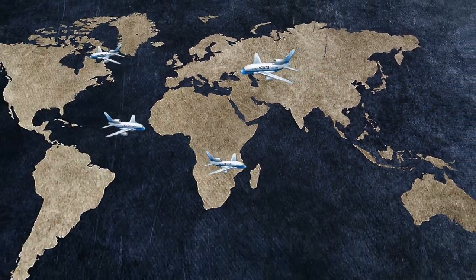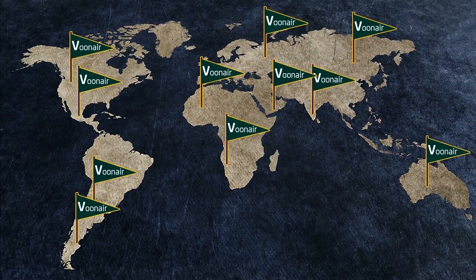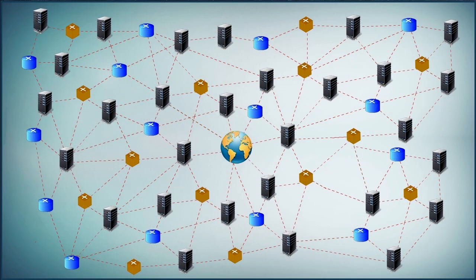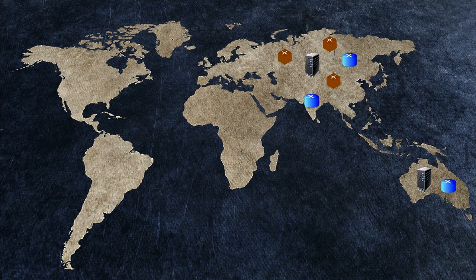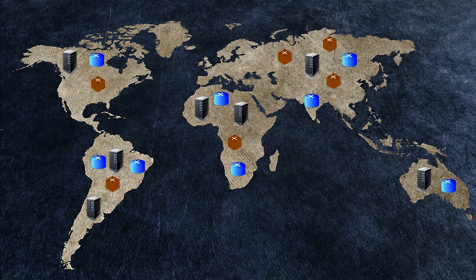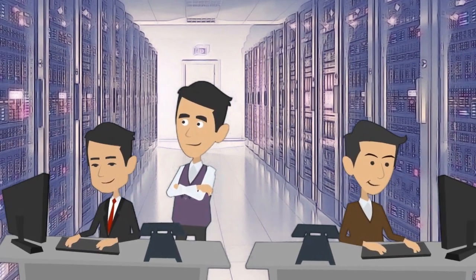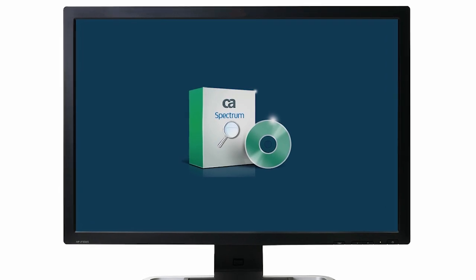Vunaire Airlines is a large airline company that operates flights to all major tourist destinations. It has a large IT environment with thousands of devices to support its business. Since Vunaire Airlines is a global organization, these devices are located in different cities across the world. The network administrators of Vunaire Airlines use CA Spectrum to monitor and manage these devices.